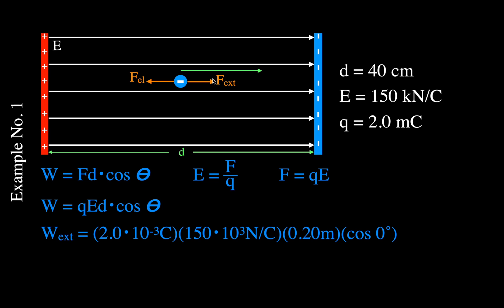The displacement vector and the external force vector are parallel and point in the same direction, so the angle is 0 degrees. The cosine of 0 degrees is 1. Multiplying everything together — the charge, field strength, distance, and cosine of 0 — we get 60 joules. So moving that charge all the way to the negative plate requires 60 joules of work by the external force.